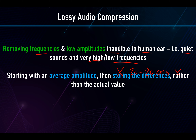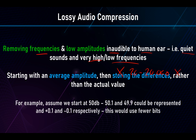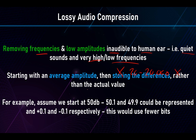Another audio compression approach: start with an average amplitude and store the difference rather than the actual value. For example, assume an average of 50 decibels — rather than storing 50.1 and 49.9, we can represent them as +0.1 and −0.1 respectively. This uses fewer bits because 0.1 requires fewer bytes to store than the larger absolute values like 50.1.